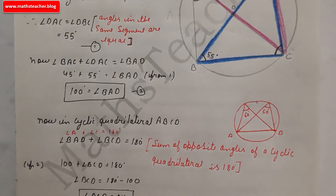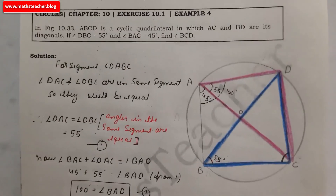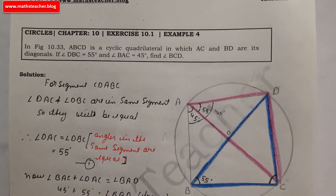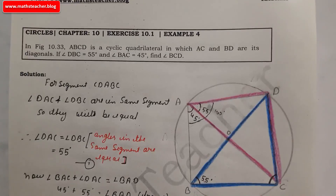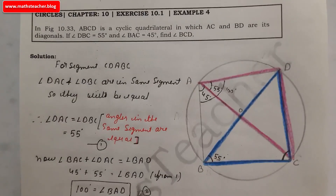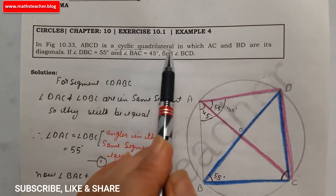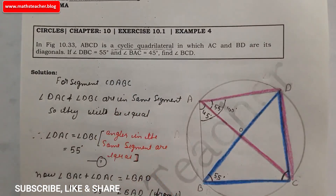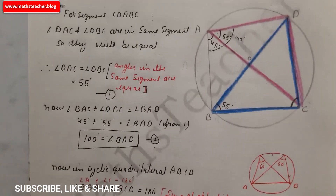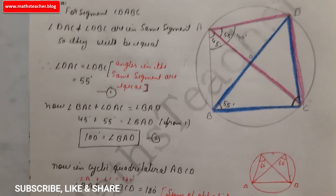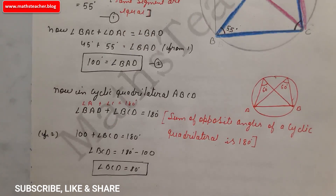So we have found angle BCD. The strategy was to identify which theorems to use — here we used the same segment theorem and the cyclic quadrilateral property, and it was easily solved. If you have any doubts, please comment in the comment box. Thank you.